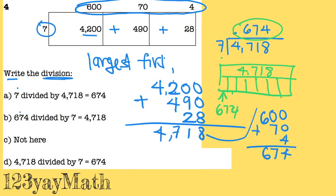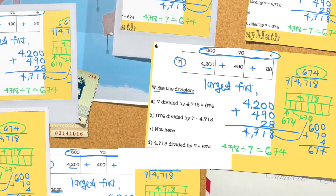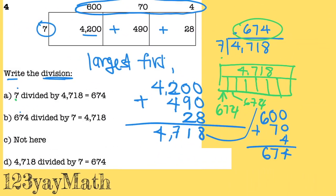So this is what this problem represents. And where is my answer? This is not it, because if you only have 7 and divided it into 4,000 parts, there is no way you will get 600. You will get like 0.0000 something.